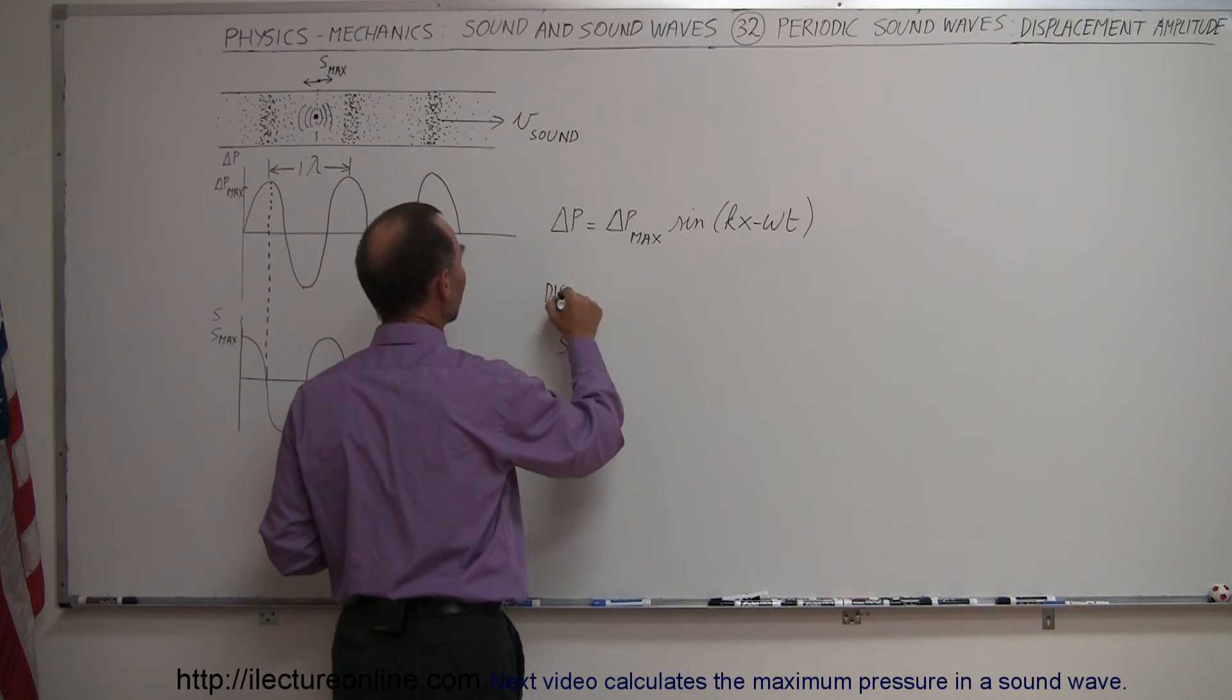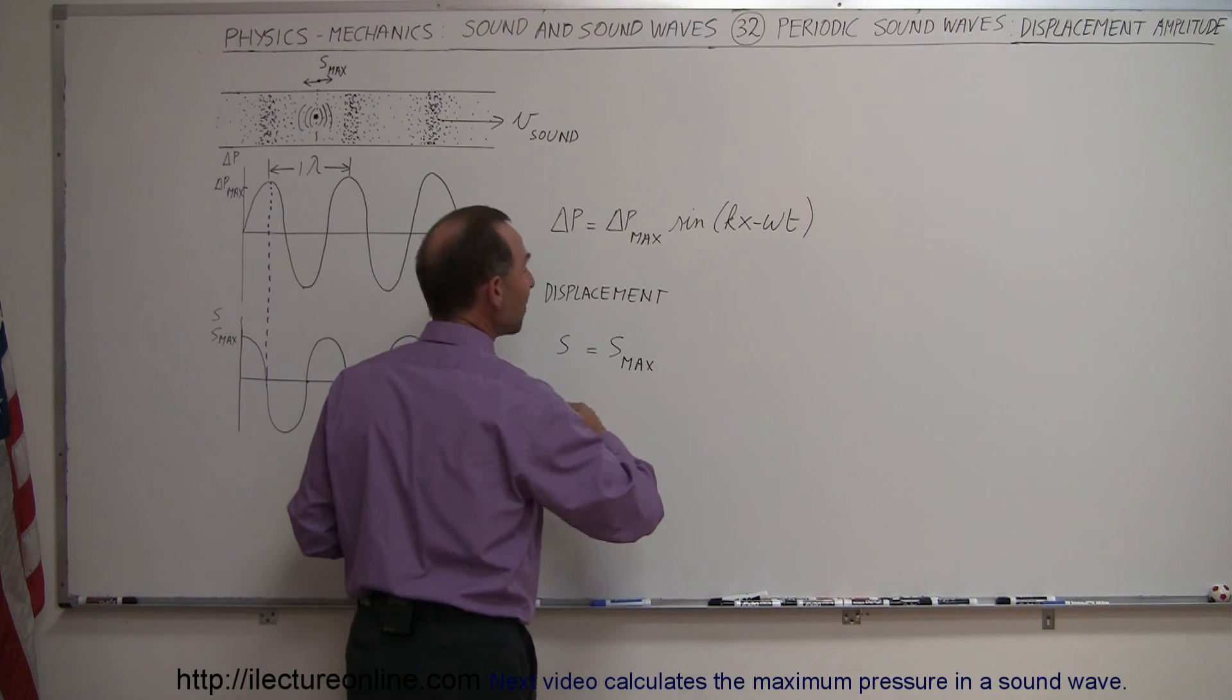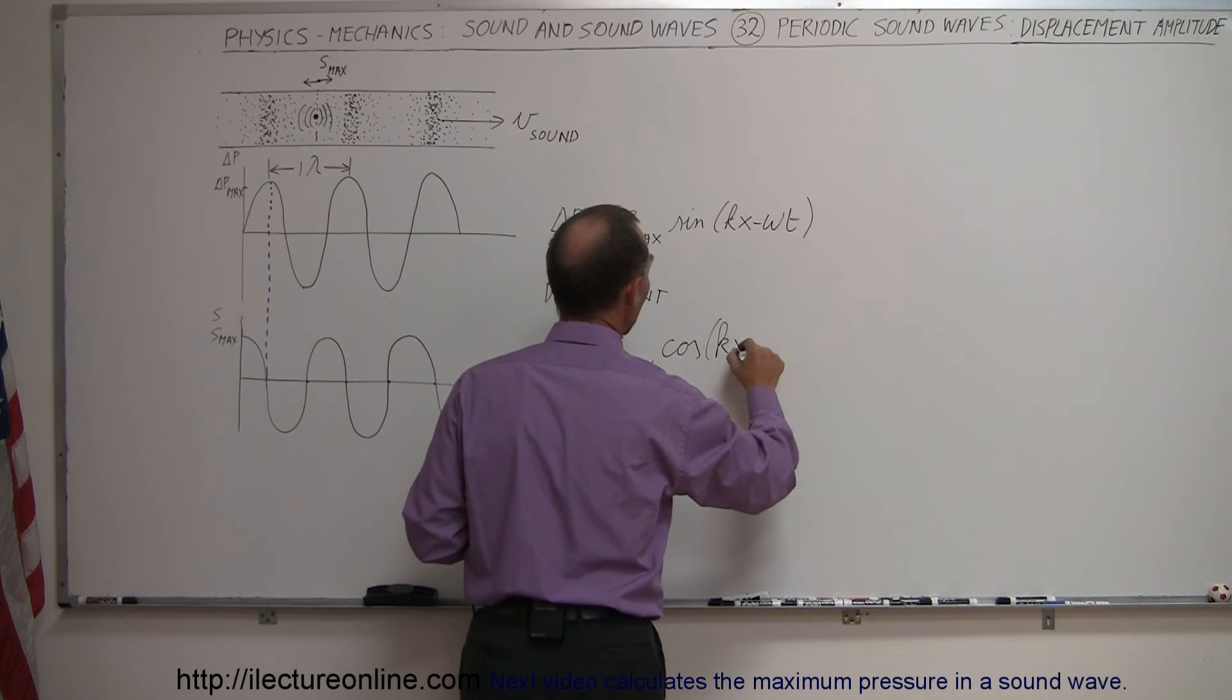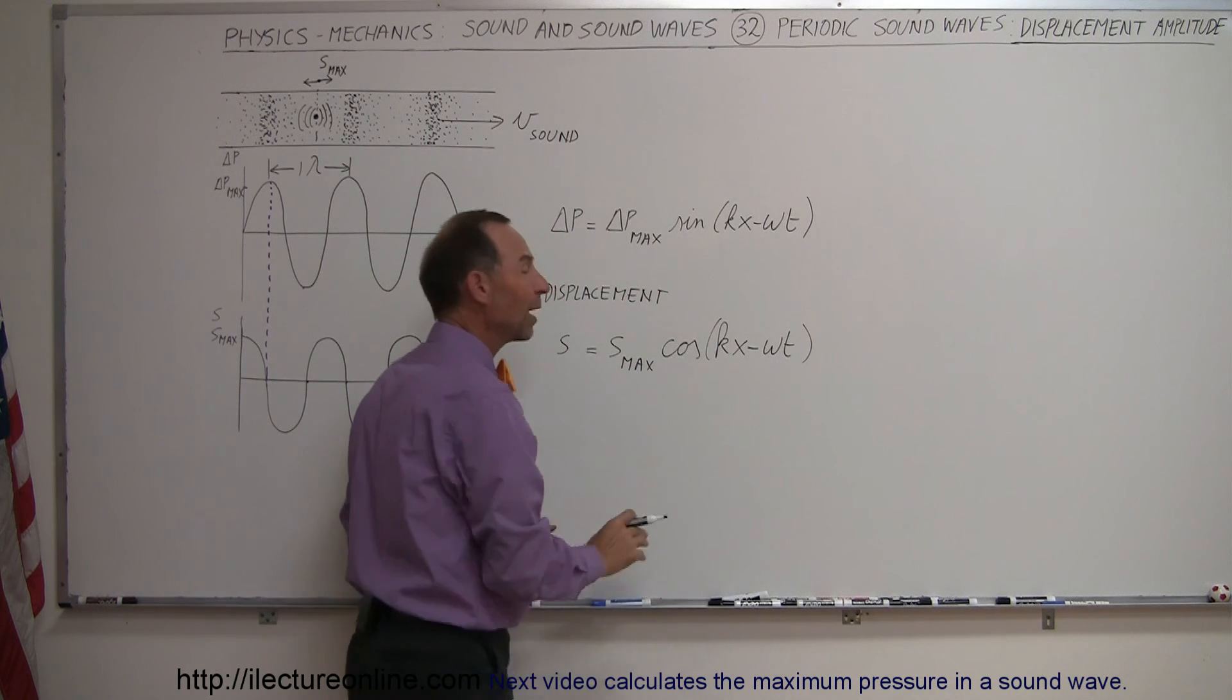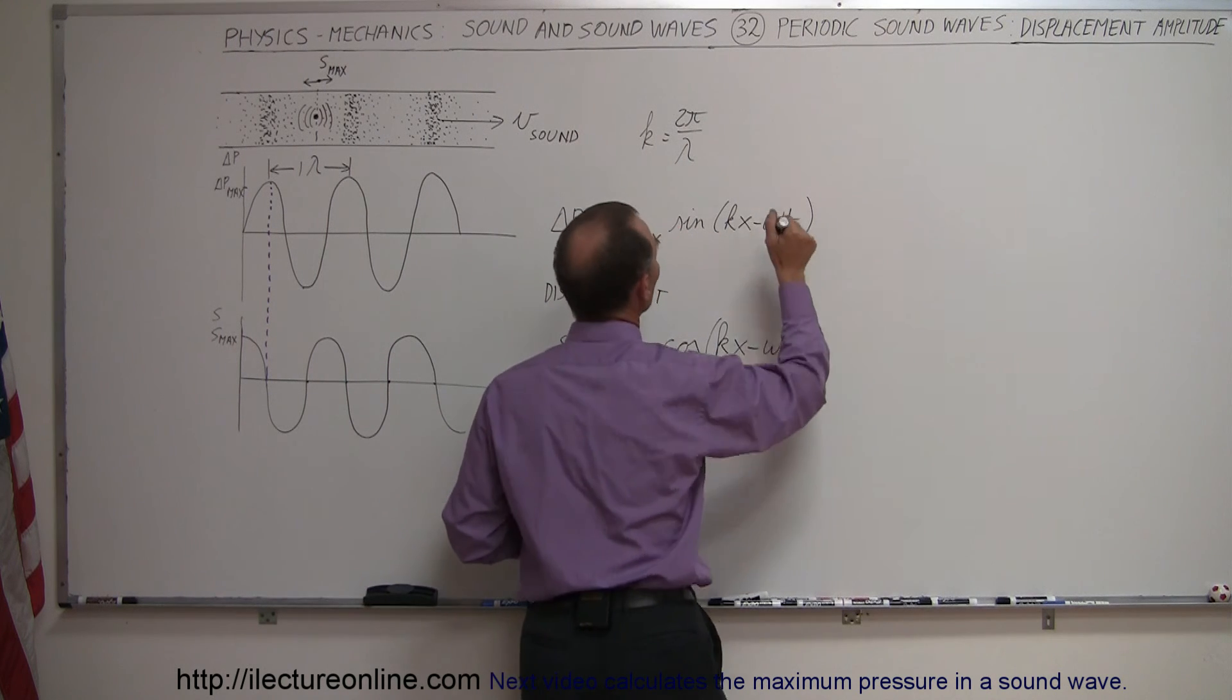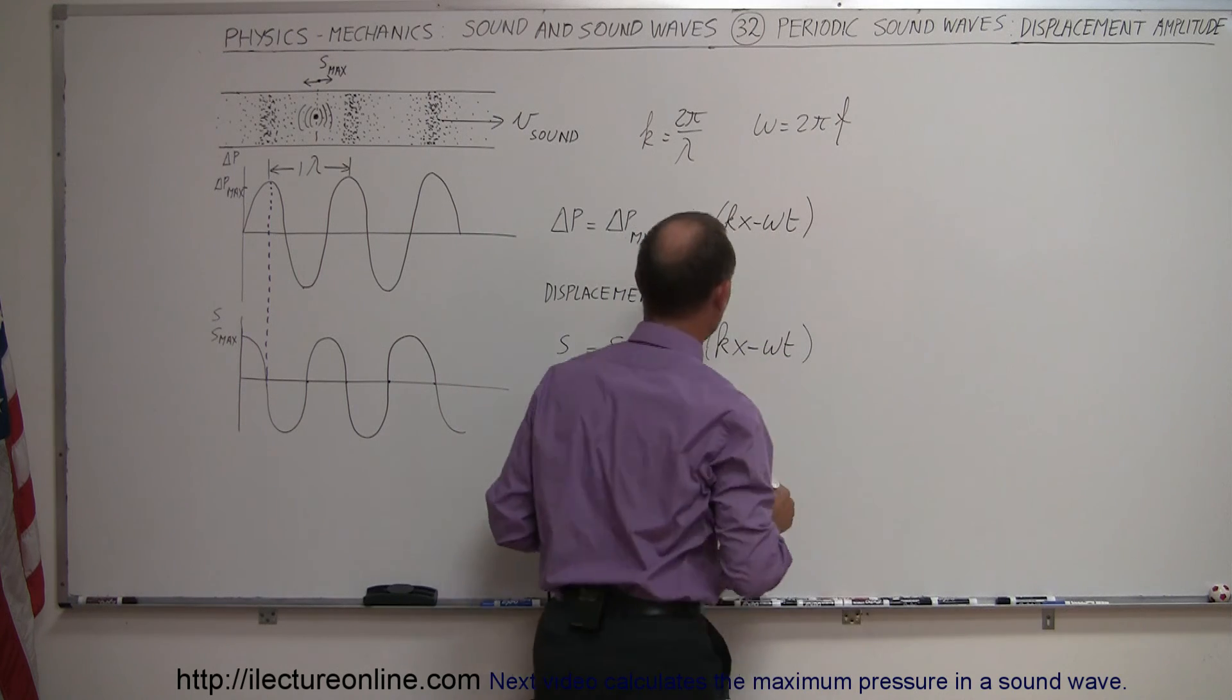We can then say that s, s stands for displacement, can be defined as s max, which would be of course the maximum amplitude of the displacement, times the cosine, instead of sine, of kx minus omega t, which means they have the same wavelength, defined by the wave number. Remember that k is defined as 2 pi over lambda, which is the wave number, and they have the same frequency. Remember omega is defined as 2 pi times the oscillatory frequency.